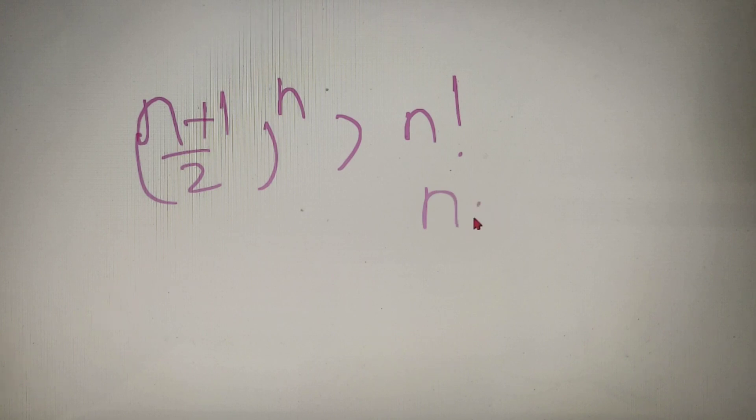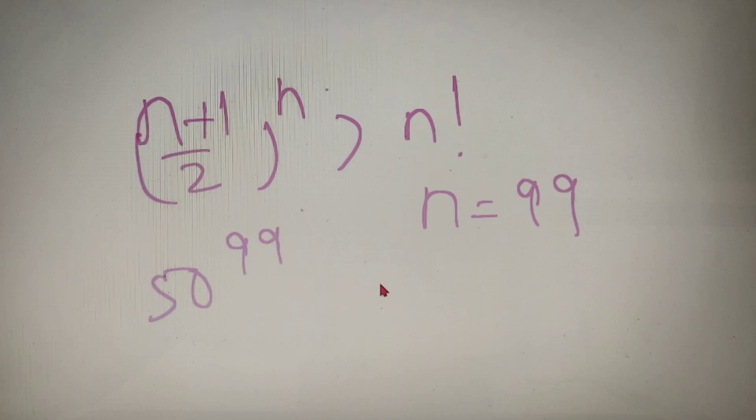Now in the second method we will use a formula, rather a fact, by which we can directly prove that how 50 to the power 99 is greater than 99 factorial. So the fact is that (n+1)/2 whole to the power n is always greater than n factorial. Now in our case, n is equal to 99, so (n+1)/2 to the power n is nothing but 50 to the power 99, and n factorial is nothing but 99 factorial. So by using this very fact or formula, I can say that 50 to the power 99 is directly greater than 99 factorial.